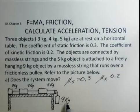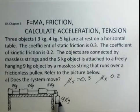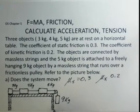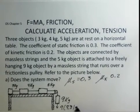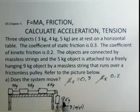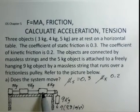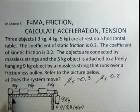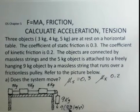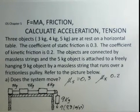We have nine kilograms pulling downward. Nine kilograms times 9.81 m/s² creates a downward force of 88.29 newtons. Up on the table, we've got five, four, and three kilograms — a total of 12 kilograms opposing nine kilograms. But that's not correct; we have to deal with forces.